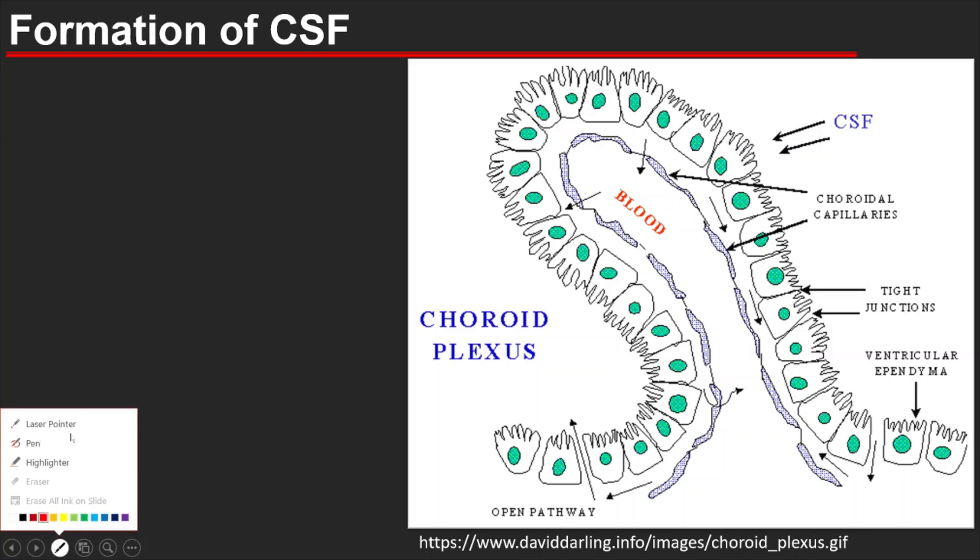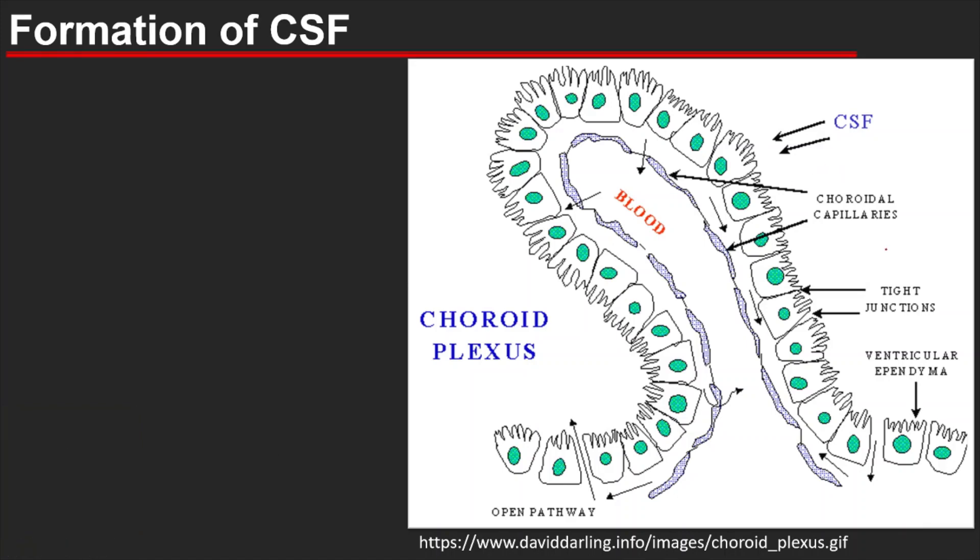This ependymal cell has tight junctions and plays a very important role in the formation of CSF. We have also discussed that capillaries in the choroid plexuses are fenestrated, so they do not have the blood-brain barrier. Easily, the fluid can move from the capillary to outside, but the ependymal cells have tight junctions, so only selective molecules can pass through and form the CSF.